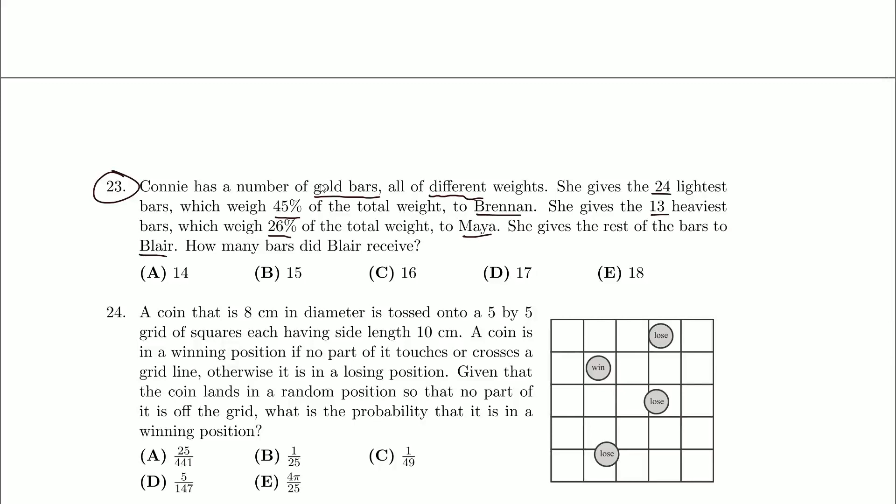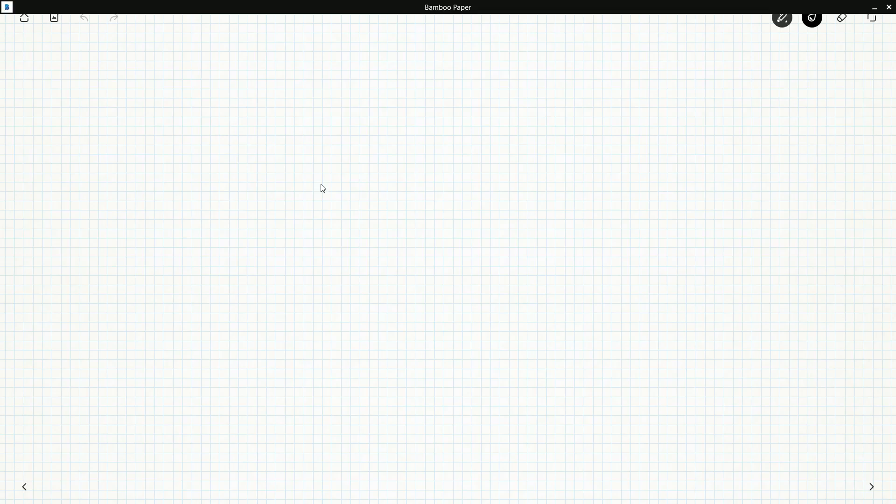Okay, 24 lightest bars weigh 45% of the total weight. I'm thinking this is gonna somehow be an average amount. They mentioned total weight a few times. I'm going to let T be the total weight.